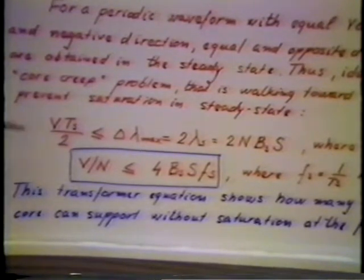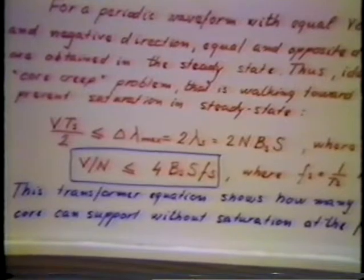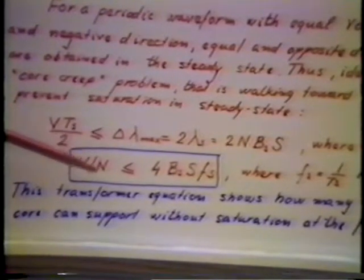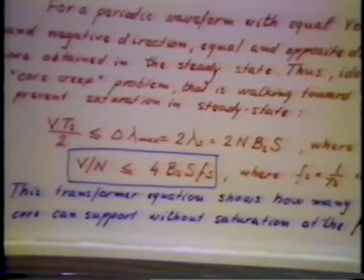Of course, we can reduce the flux swing by reducing the volts applied to the core or by increasing the number of turns. And we saw that in the previous demonstration, again, just showing here.